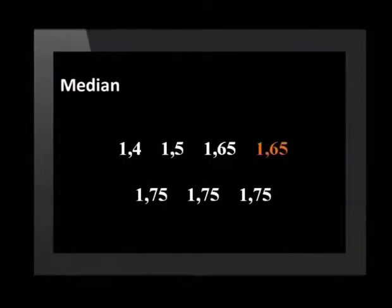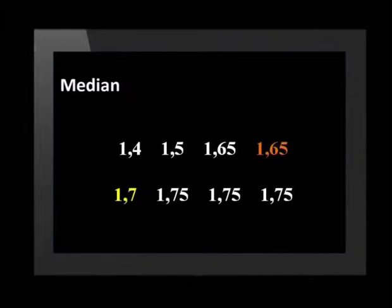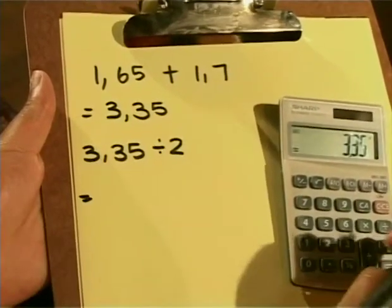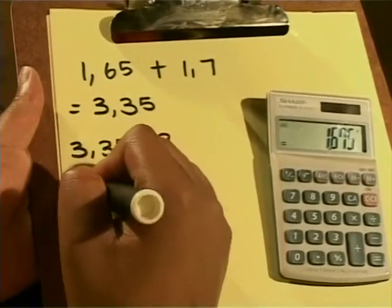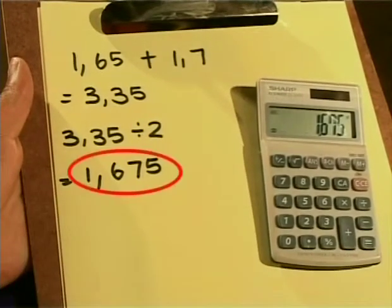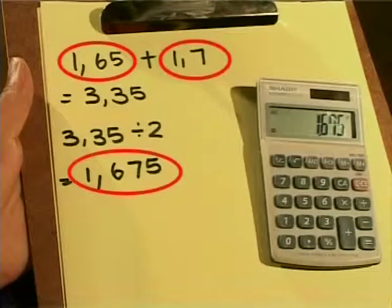But what happens if there are two numbers left in the middle? If there's an even amount of data in a set, you will be left with two middle numbers, so the median will be halfway between them. For example, let's include the height of the netball team's reserve player — she is 1.7 metres tall. Now these two numbers are in the middle, so you add 1.65 and 1.7 together and divide by 2. That's 3.35 divided by 2, which is 1.675. So 1.675 is the median in this situation.